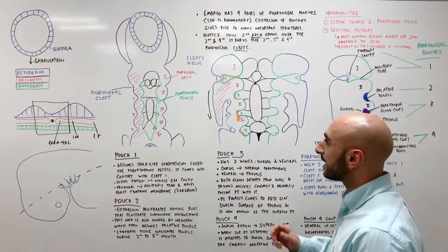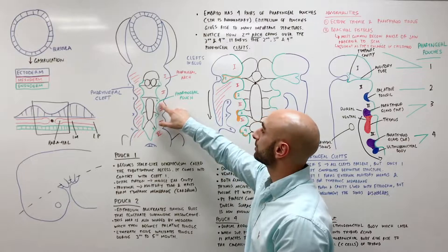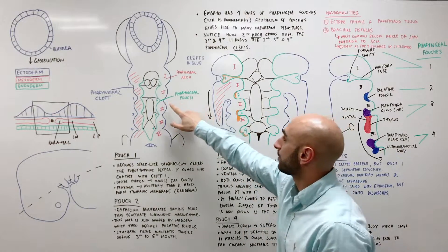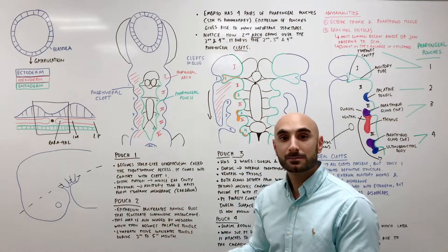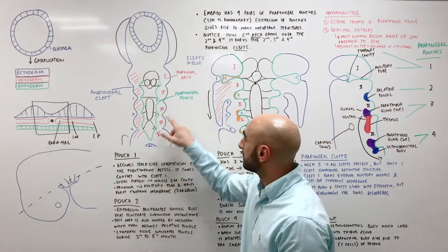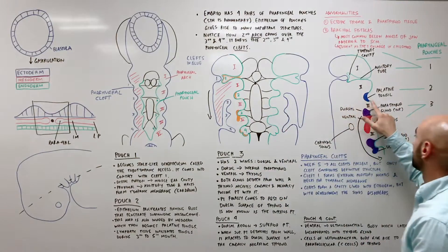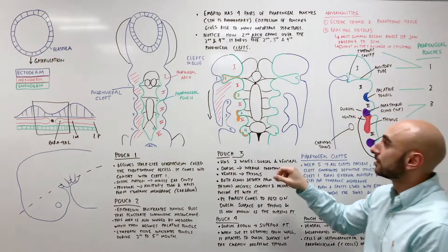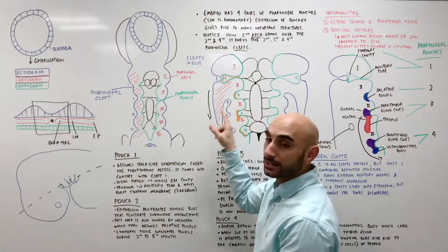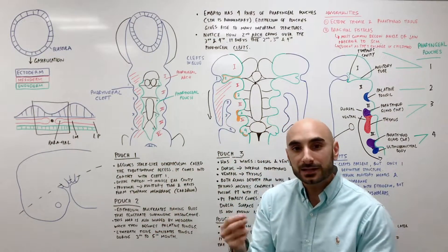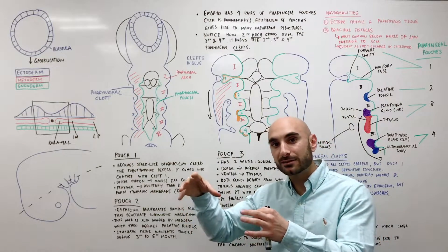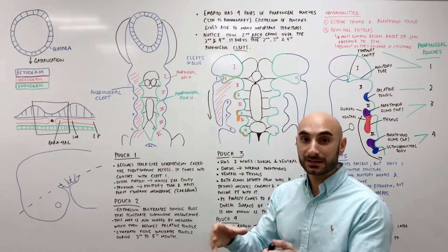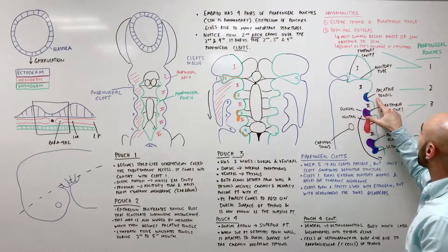So now let's talk about the second pharyngeal pouch. Pouch 2, step 1, step 2, step 3. This is the easiest pouch to remember. It becomes only one thing. It becomes a tonsil, specifically the palatine tonsil. So what happens is that the inner lining or the epithelium of the second pharyngeal pouch proliferates, invades surrounding mesenchyme and it becomes the palatine tonsil.